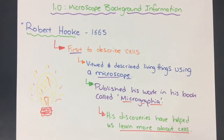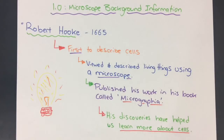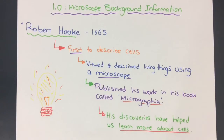The work of Robert Hooke in 1665 was pretty important to us in understanding how living things work. Prior to Robert Hooke's work in 1665, scientists had been making observations of living things but not really understanding how they work on a cellular level — so we're talking about cells.